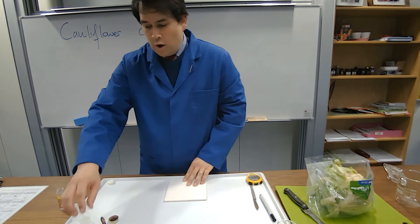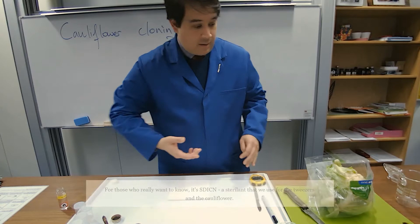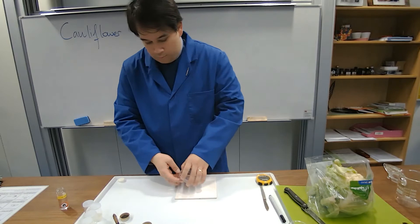We're also going to be using a disinfectant called SDICM. It just kills off everything as well, and that's to wash our cauliflower later. Same idea, cauliflower is going to be full of all sorts of stuff growing on it. So here we go. What we're going to do is use a petri dish which will help us maintain our little area of sterility in that sense.